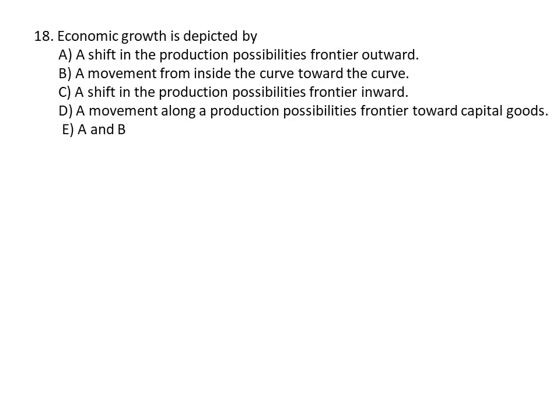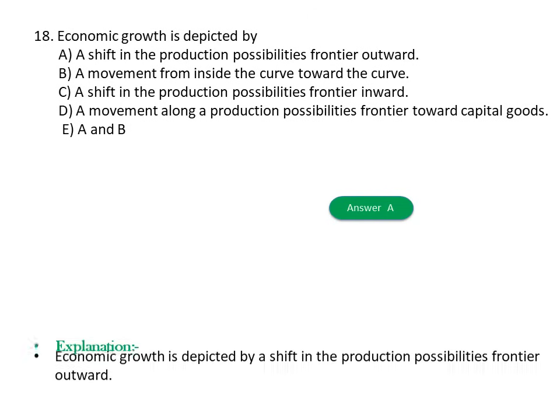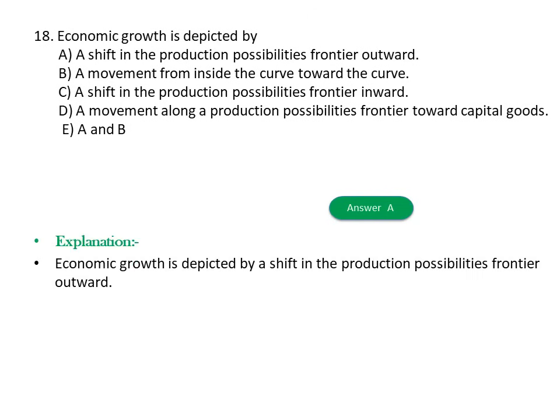Question eighteen: Economic growth is depicted by: A) A shift in production possibility frontier outward, B) A movement from inside the curve toward the curve, C) A shift in production possibility frontier inward, D) A movement along the PPF toward capital goods, E) A and B. The answer is A — economic growth is depicted by an outward shift of the production possibility frontier.